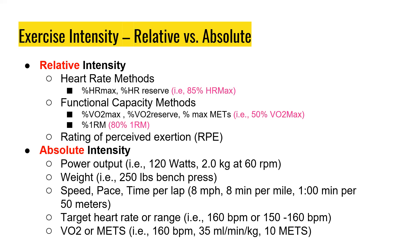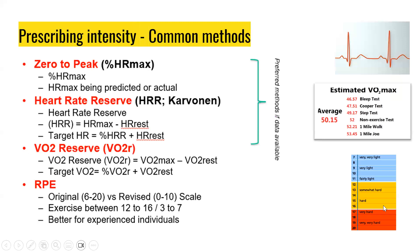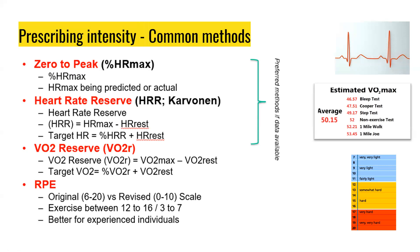You can also use absolute intensity methods like power output, weight, speed, pace, time per lap, target heart rate range, or VO2 max. For today's lab, we are going to study the following exercise intensity methods using three common approaches: the zero-to-peak (percentage of heart rate max), heart rate reserve (the Karvonen method), and the RPE scale. Another method we won't use this week but will use next week for Lab 5 is the VO2 reserve method.